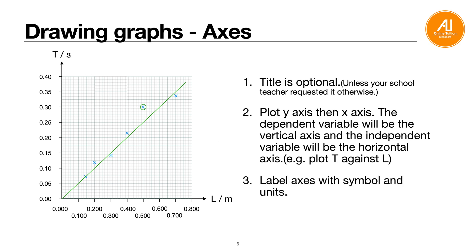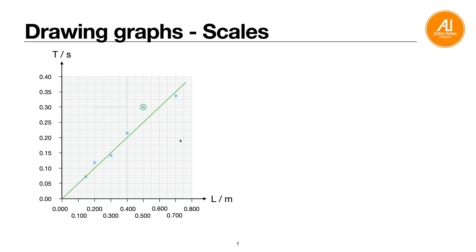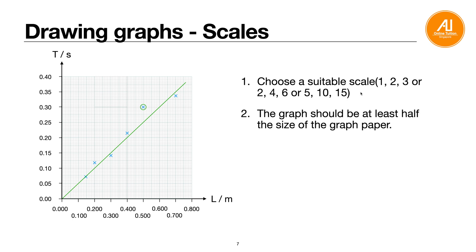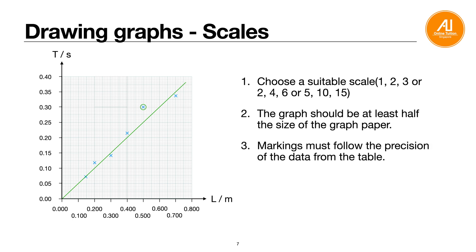For scale, choose a reasonable increment — either 1, 2, 4, 5, 10, or 15 — don't choose increments like 3, 6, 9 which are harder to work with. The graph should fill at least half the graph paper — don't squeeze all the points into a small corner. Ideally fill as much of the graph paper as possible.